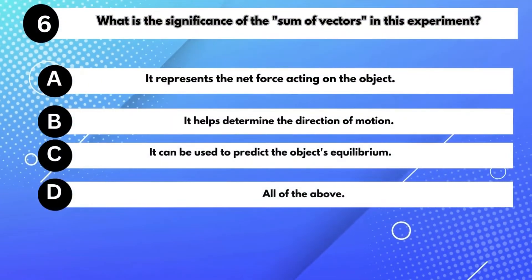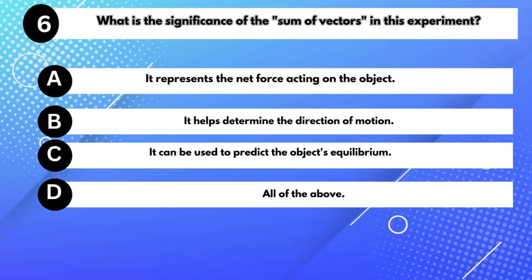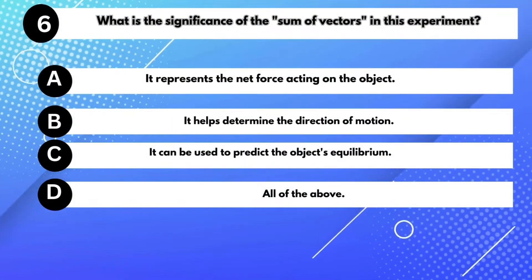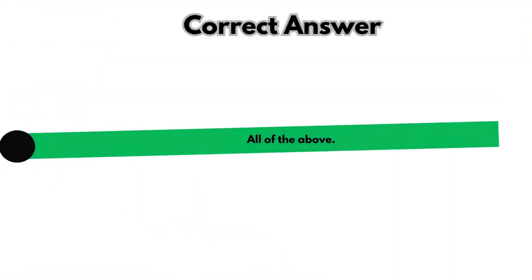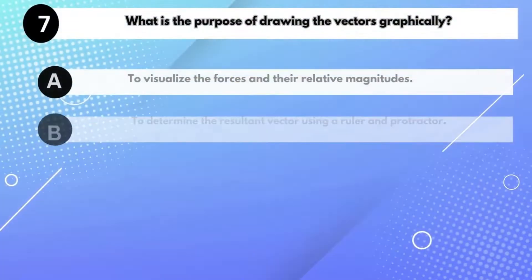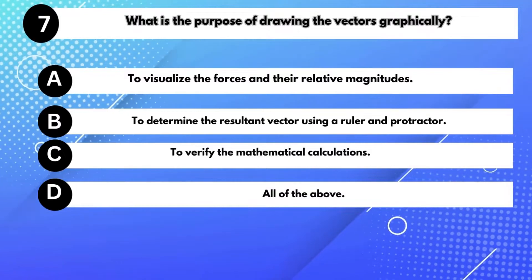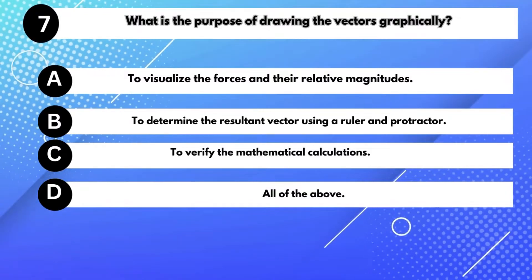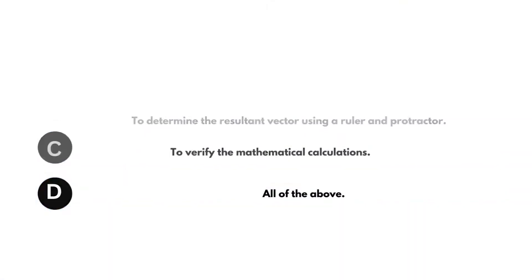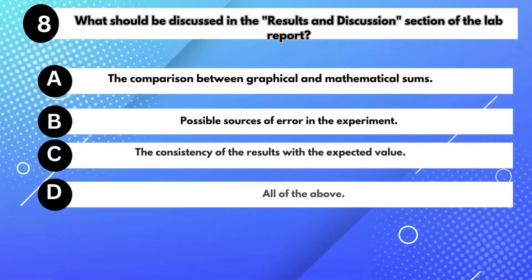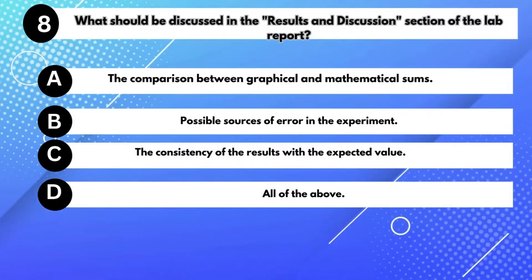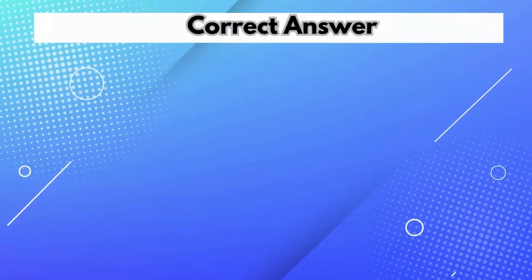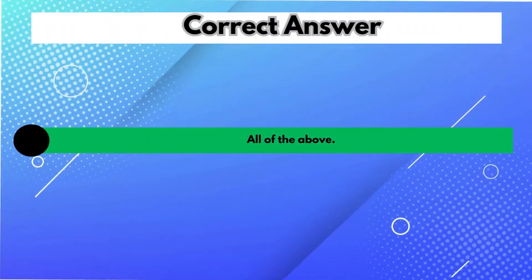What is the significance of the sum of vectors in this experiment? Answer D: All of the above. What is the purpose of drawing the vectors graphically? Answer D: All of the above. What should be discussed in the results and discussion section of the lab report? Answer D: All of the above.